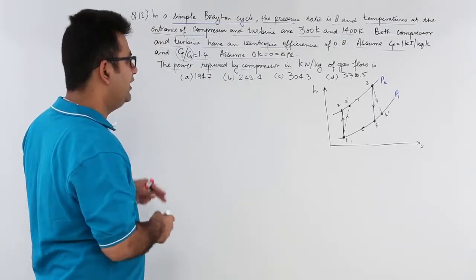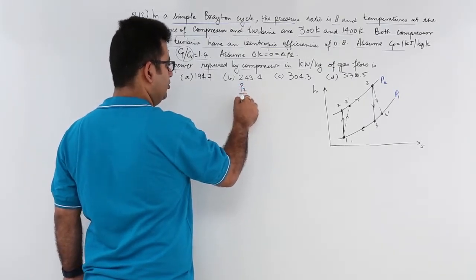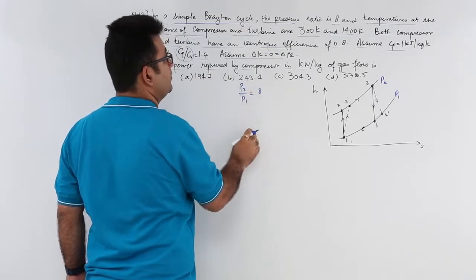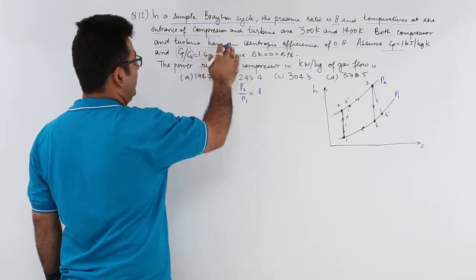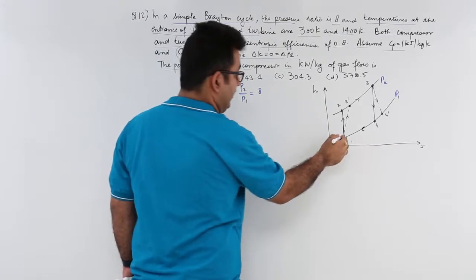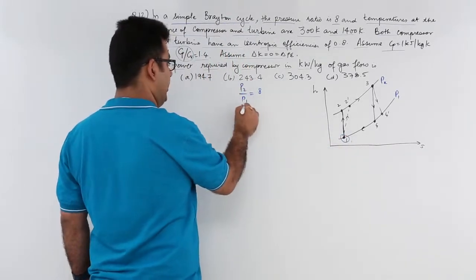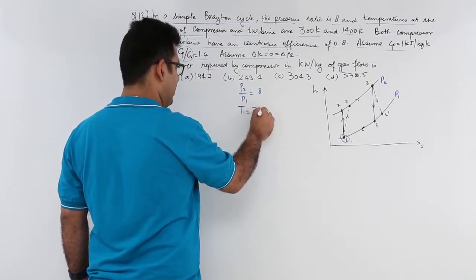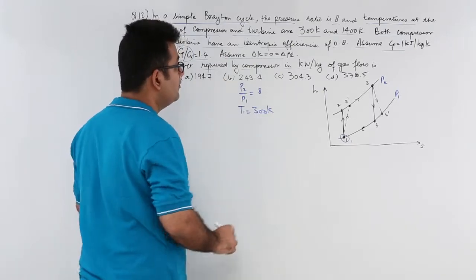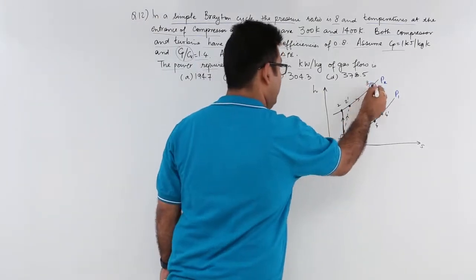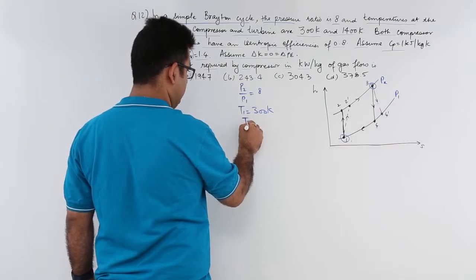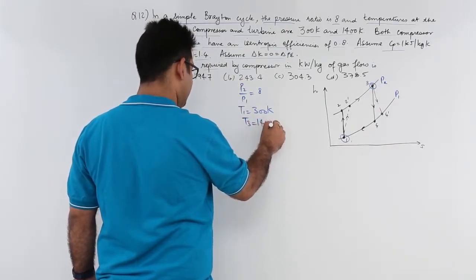So the data is that P2 by P1 is 8, temperature at the compressor entrance, so T1 is 300, and the turbine entrance which is this point, so T3 is 1400.